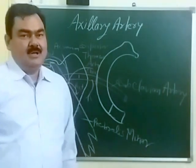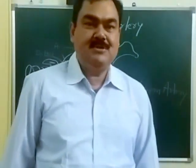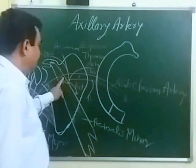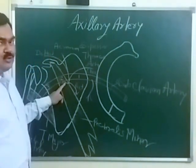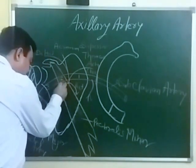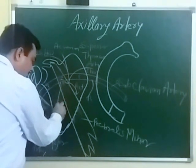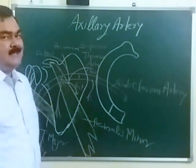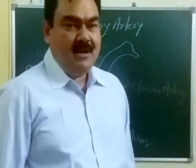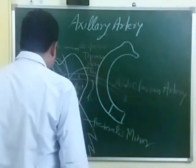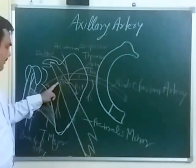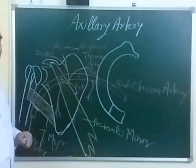The second branch from the second part is the lateral thoracic artery, which supplies the lateral part of the thoracic region. The third part of the axillary artery extends from the lower border of pectoralis minor to the lower border of teres major.